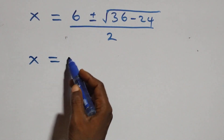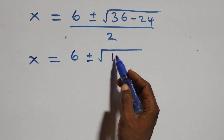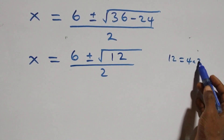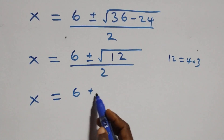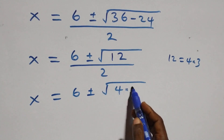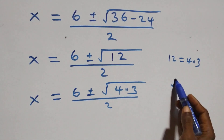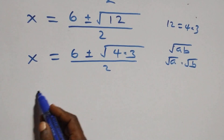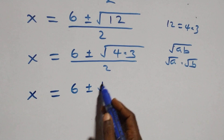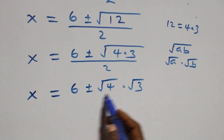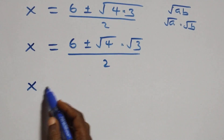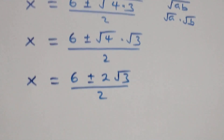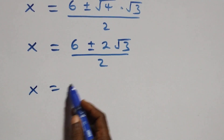So we have x equals six plus or minus square root of 12, all over two. Using the property that root of a times b equals root a times root b, we write root 12 as root four times root three, which gives two root three. Separating the fraction, this is six over two plus or minus two root three over two.